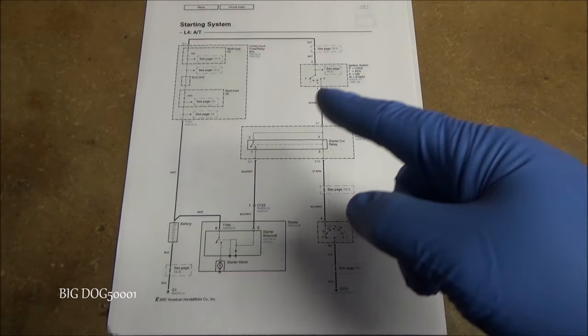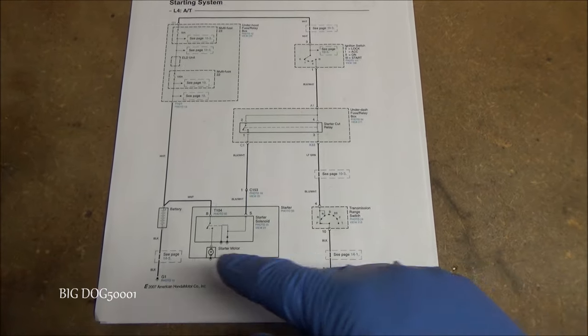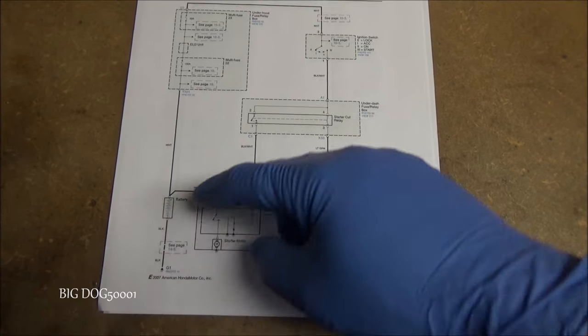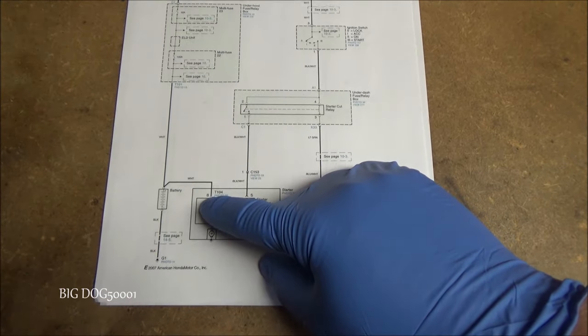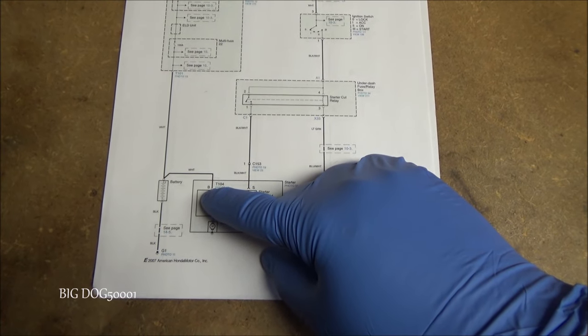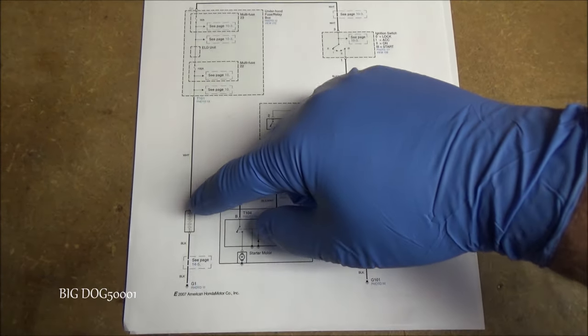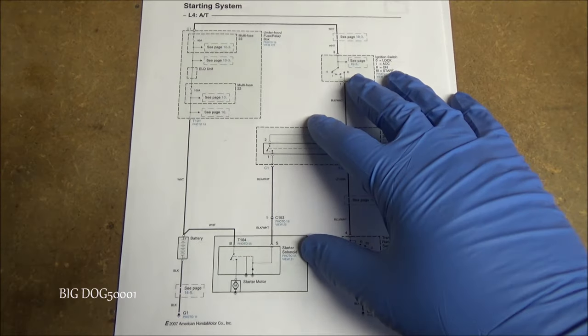We have our transmission range switch, that's what I was talking about, our safety switch so we don't start the vehicle in gear. Let's go through how the power flows on this wiring diagram. From our battery, we got a big heavy duty cable that's going to go over to our starter right here as labeled with that B right there.